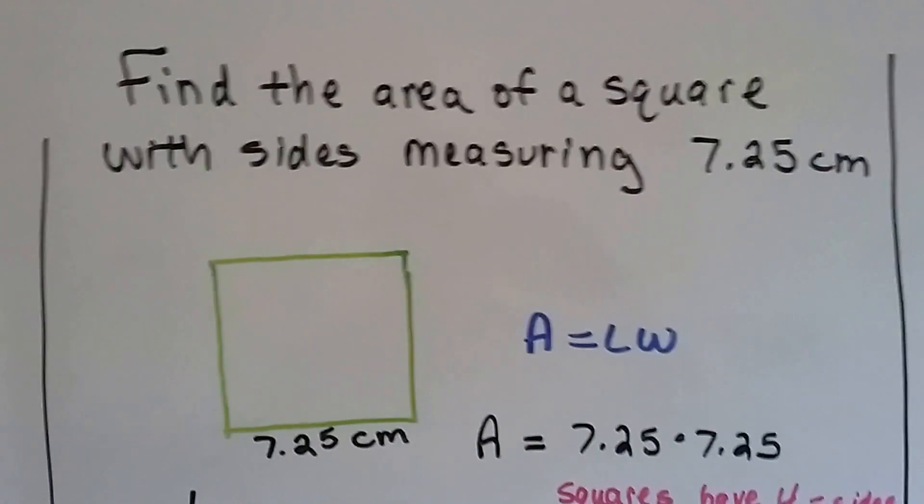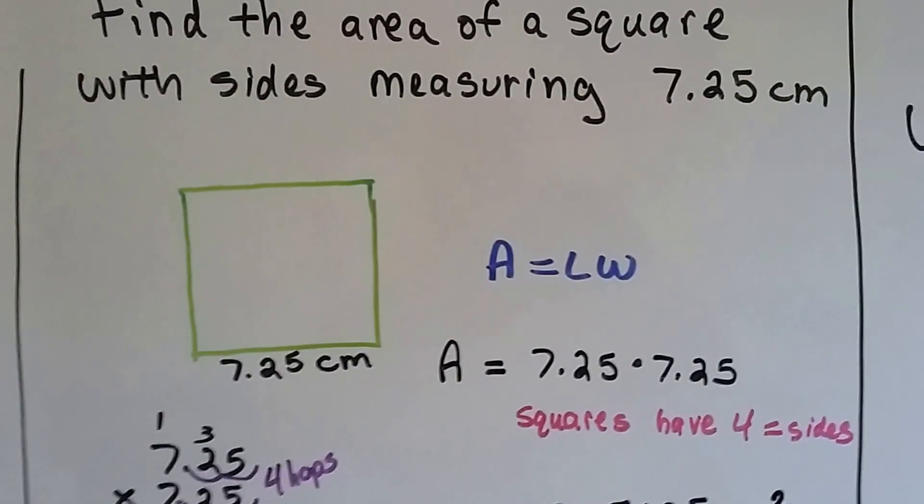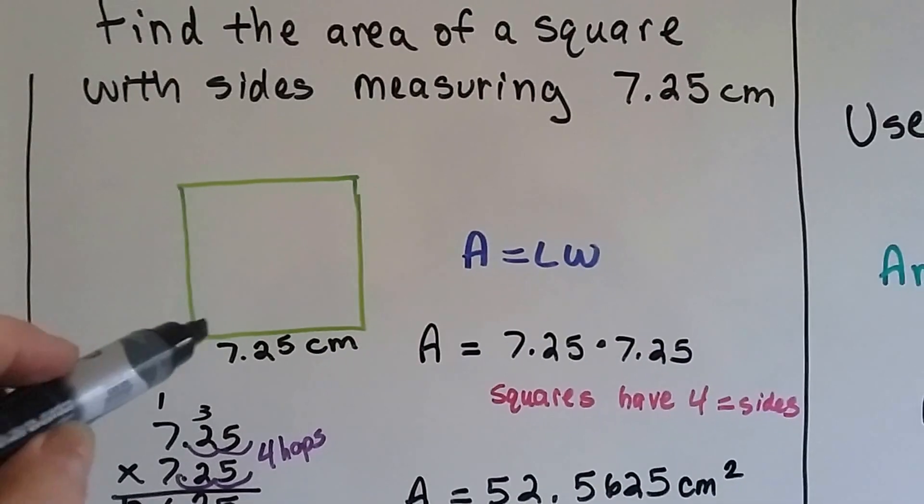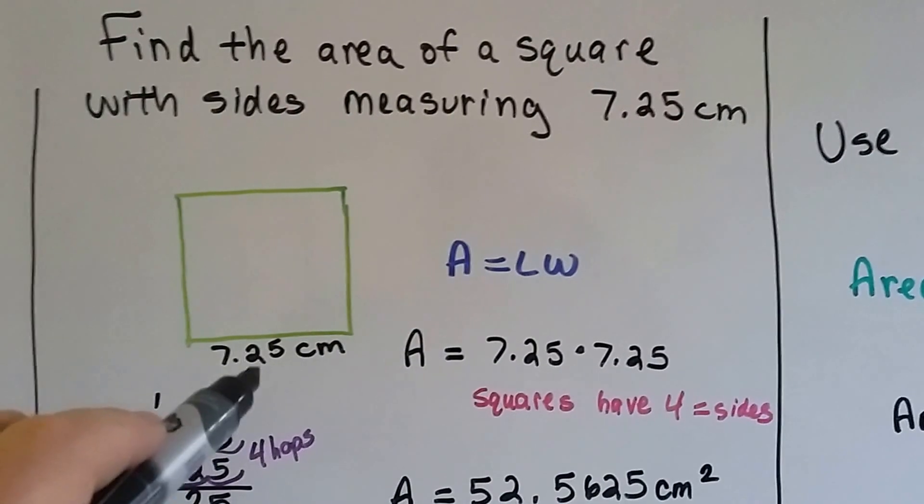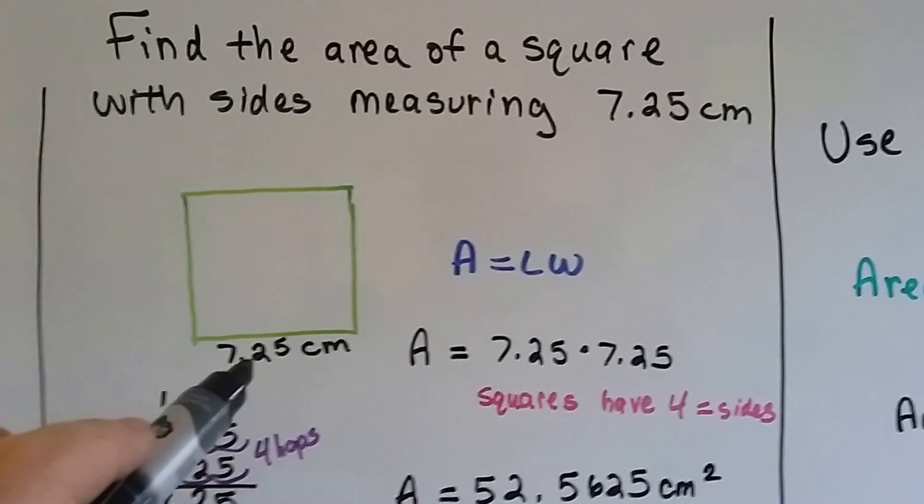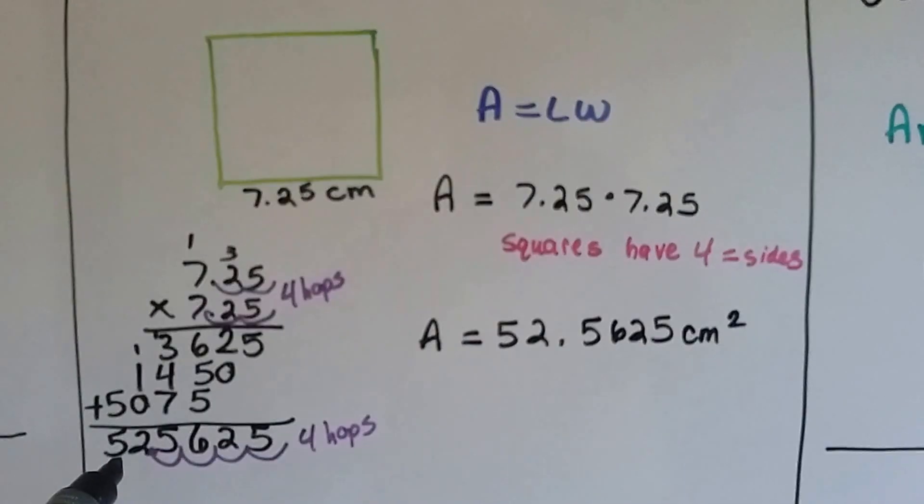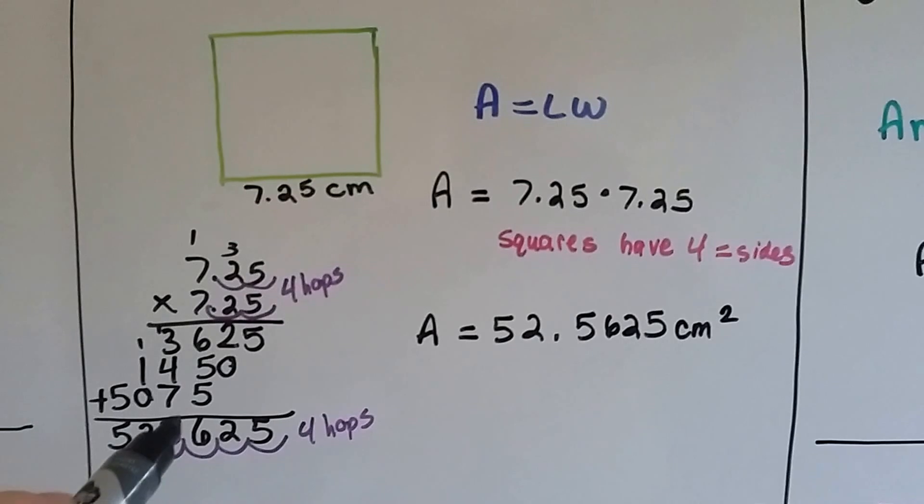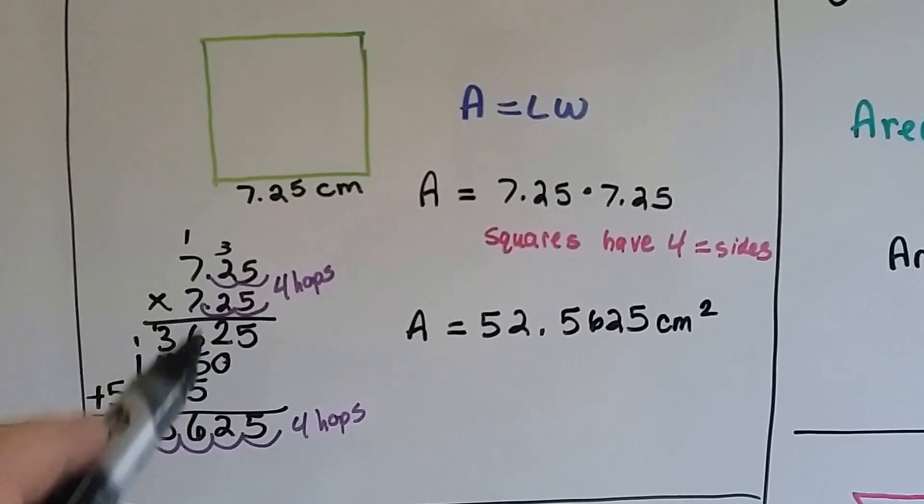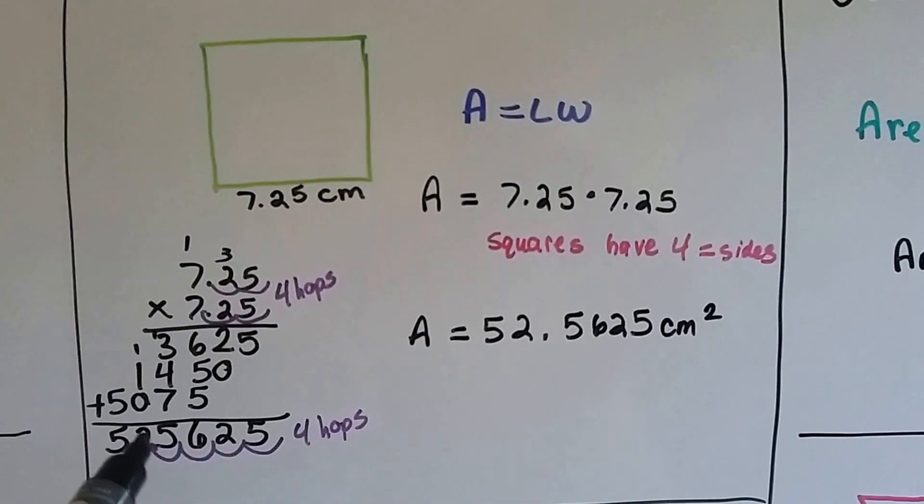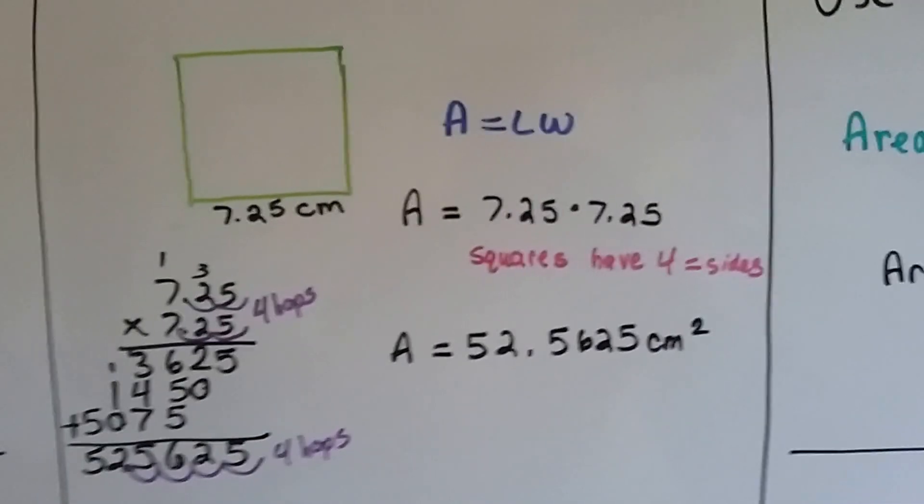Find the area of a square with sides measuring 7.25 centimeters. The area is equal to the length times the width. Well, with a square, all the sides are the same. So if you're just given one measure for a square, that's okay. You just multiply 7.25 times 7.25, and we get 52.5625. Because there were two decimal points, we had four hops in the equation, so we have four hops in the answer. Our answer is 52.5625 centimeters squared.